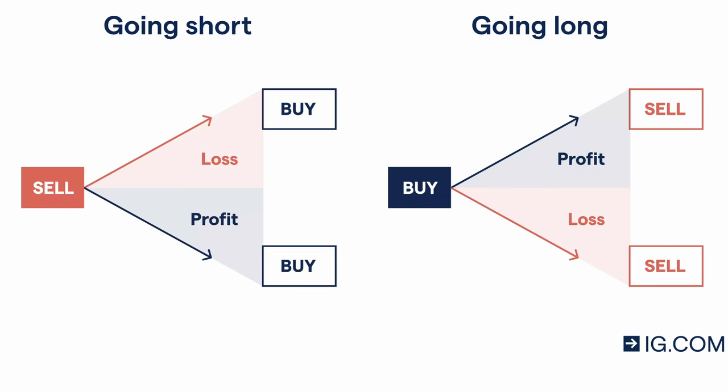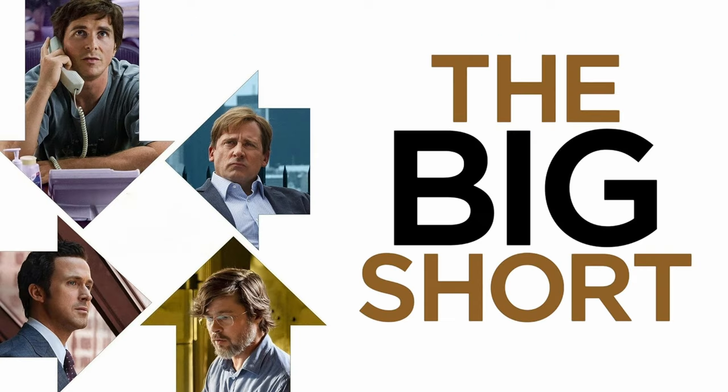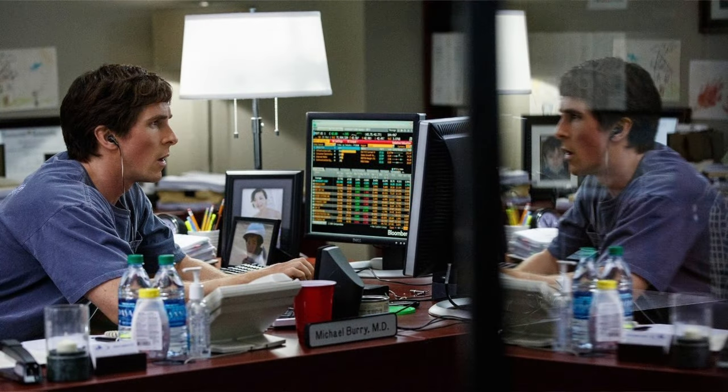Investors with a long position are hoping the underlying asset increases in value. Short investors, on the other hand, hope the value of the asset declines. If you've seen the movie The Big Short, you'll remember Michael Burry took a short position against the housing market by selling borrowed mortgage-backed securities. He hoped that the value of housing would fall, causing the mortgage-backed securities to decline in value. This was during the 2008 recession.